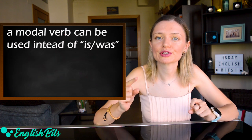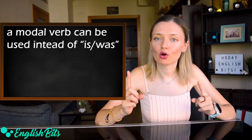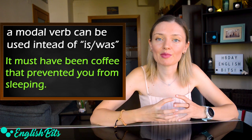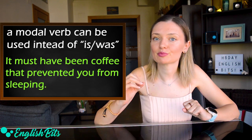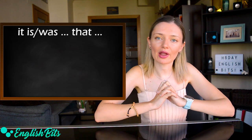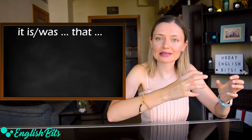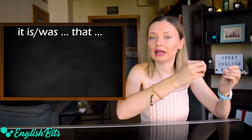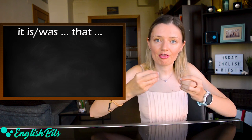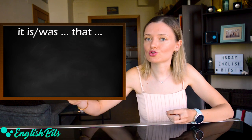We can also use a modal verb instead of 'is' or 'was.' For example: 'It must have been coffee that prevented you from sleeping.' Now we're going to look at when we can use 'it is/was + new information + that + information we already know.'